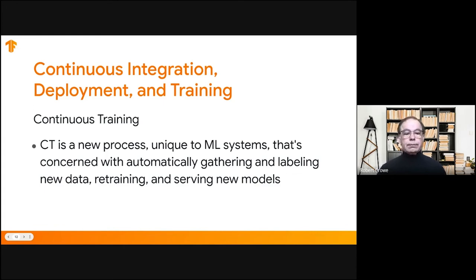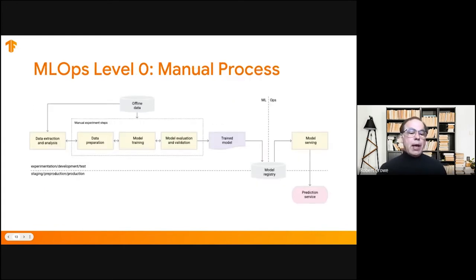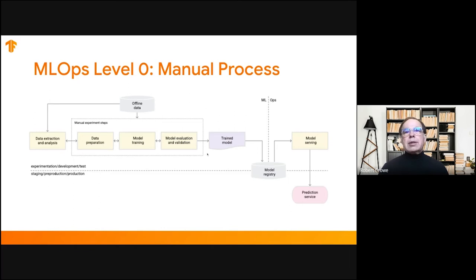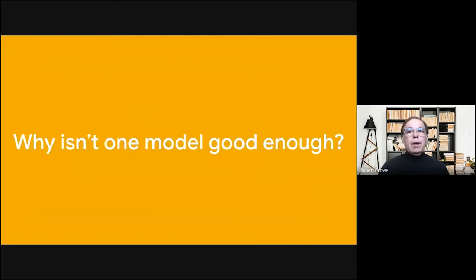Where people start out is normally a manual process, and at some scale that works fine. You're trying to cover all the bases, triggering things manually — with an experimentation side that has manual steps to create a trained model that's deployed into some sort of registry, even if it's just a directory on a server, and then we serve it to a prediction service. But why isn't one model good enough? Why do we need to consider retraining?